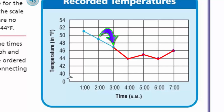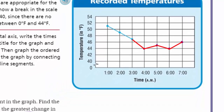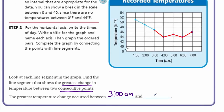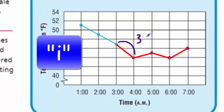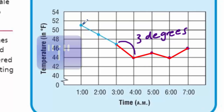From three to four: 47 to 44 is three degrees — that's the greatest change. The rest are only a difference of one degree, except six to seven which went from 44 to 46, a difference of two degrees. So the greatest temperature change occurred between 3 a.m. and 4 a.m. — a drop of three degrees. You can see that decline clearly on the graph itself.